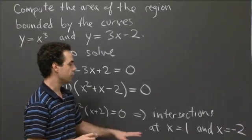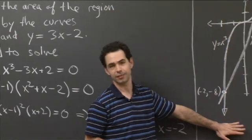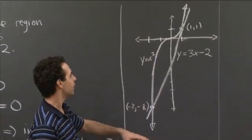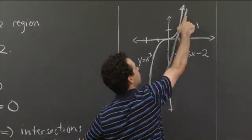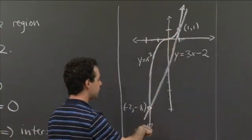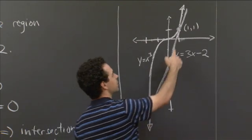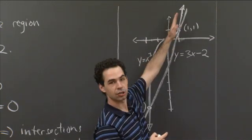All right, so you can take that information and you can put it together and you can make a nice picture like this, or I suppose you could have made the nice picture before you had that information. And so we see that we've got this line y equals 3x minus 2 here, and we have the curve y equals x cubed, and they have two intersection points. They intersect once down at x equals minus 2, y equals minus 8, and they intersect again up at the point 1, 1, and they're actually tangent there.